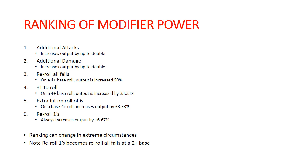There are some things that trigger on the wound roll, like a six to wound, that increase damage or add another wound to be saved. Those are also good effects, but slightly less valuable than hit roll triggers because they're going to happen less often — you're already getting hits filtered out by your hit roll, so you're rolling fewer dice to wound and have less opportunity to hit those sixes.